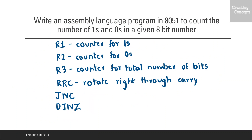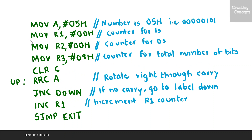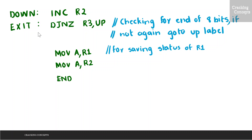Since the carry flag is used throughout the program, we will clear it using the statement CLR C. In the following statements, we perform a right rotation of the accumulator by one position, take that value into the carry flag, and check whether it is a 1 or 0. If it is 1, R1 is incremented. If it is 0, R2 is incremented. After each check, we decrement R3 and check whether it is 0. If it is not 0, the set of statements is repeated, and when it reaches 0, the count has been completed.